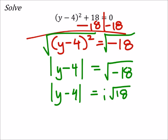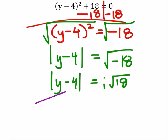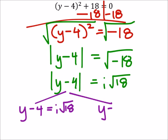Now that I have that absolute value, I'm going to break this up into two separate equations. So I've got y - 4 = i√18, but y - 4, on the other hand, equals negative i√18.